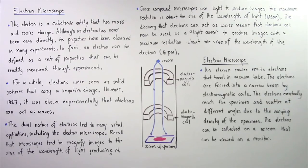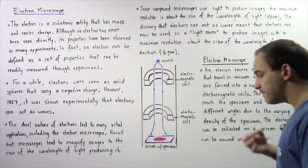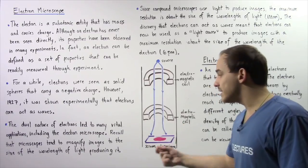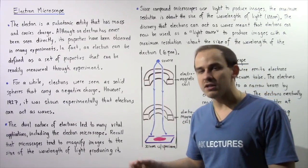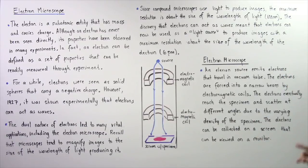Now the electrons eventually reach the specimen that we are examining and scatter at different angles as a result of the fact that the specimen is composed of material that has varying densities.